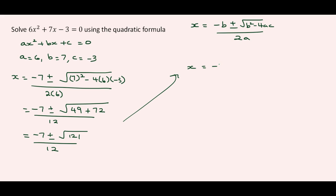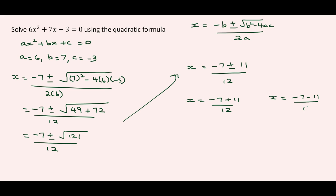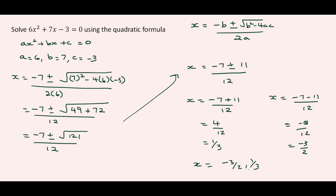X equals minus 7 plus or minus 11, since the square root of 121 is 11, over 12. So X equals minus 7 plus 11 over 12, and X also equals minus 7 minus 11 over 12. Minus 7 plus 11 gives us 4 over 12, which is 1 over 3. And here we have minus 18 over 12 — dividing by 6 gives minus 3 over 2. Therefore X equals negative 3 over 2 and 1 over 3.